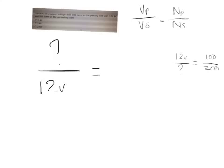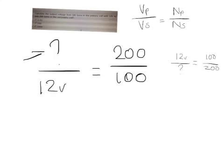What we need to do is rearrange our formula so that the unknown is on top. So it's a question mark divided by 12 volts, equal to — reversing this side too — 200 divided by 100. So now what we need to do is find this question mark. To do that, we times the 12 volts by the 200, and that will help us work out what our question mark is.